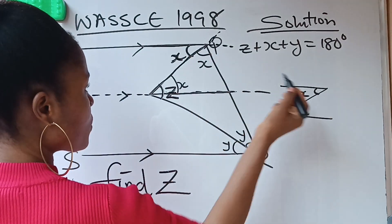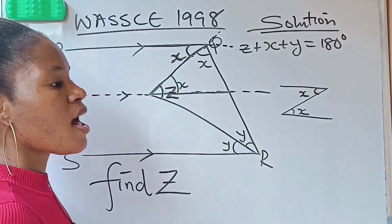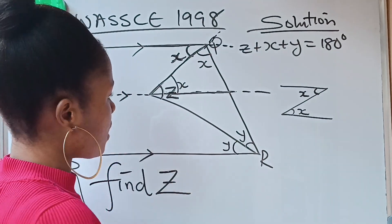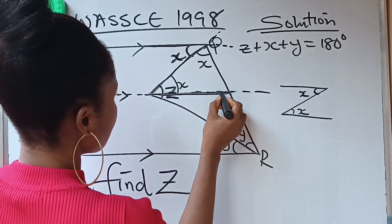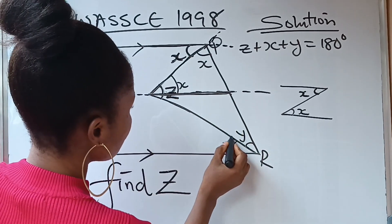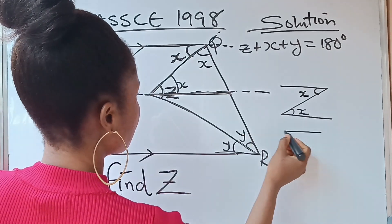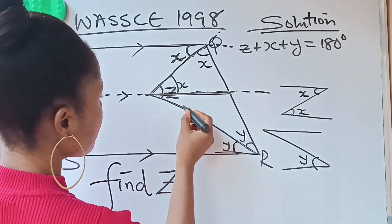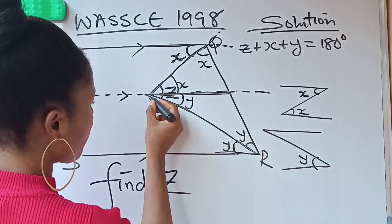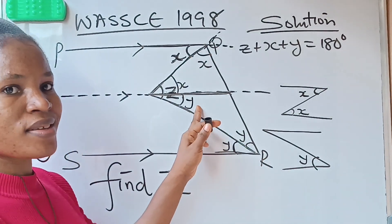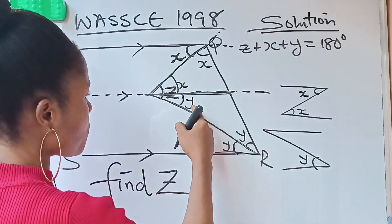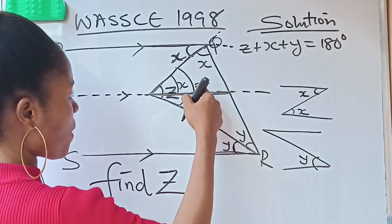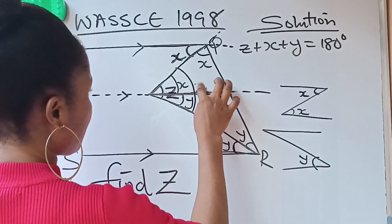Now look at another Z that is formed, giving us a second alternate angle. This position is y, and because this Z is also formed there, this angle is also y. So what this shows us is that x plus y together make up z — everything there is z. Therefore, x plus y equals z.